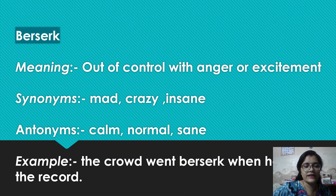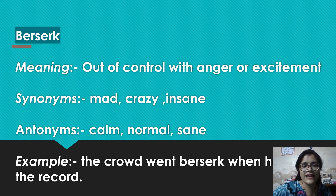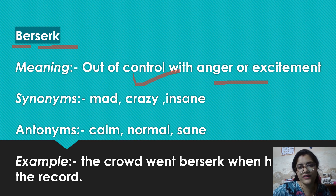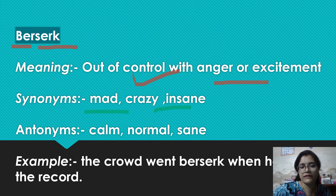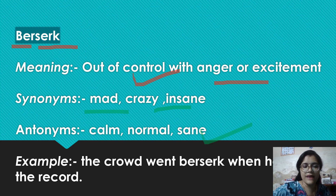Okay, next word here is berserk — it's spelled B-E-R-S-E-R-K. Iska matlab hota hai: out of control with anger or excitement. Synonyms: mad, crazy, ya insane. Antonyms: calm, normal, ya phir sane. Example: The crowd went berserk when he hit the record.